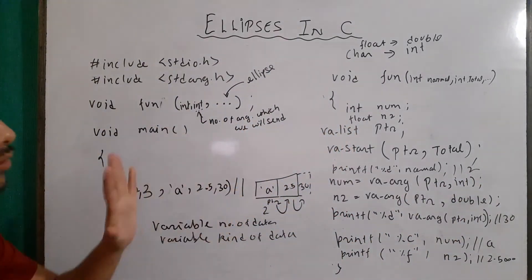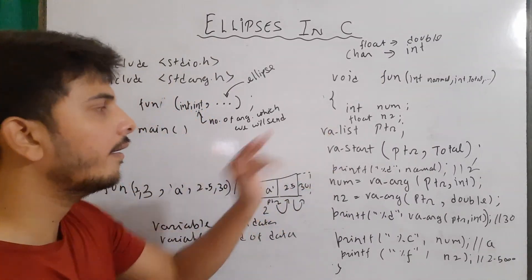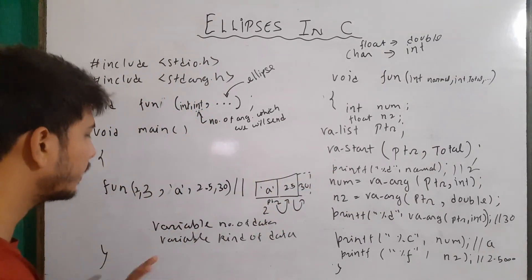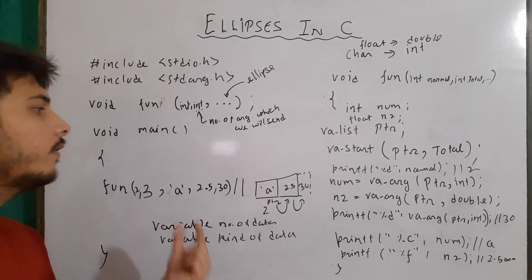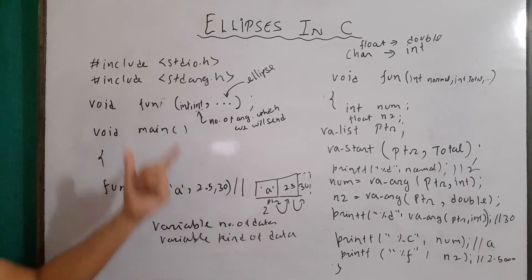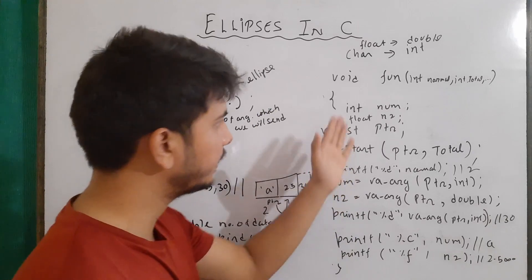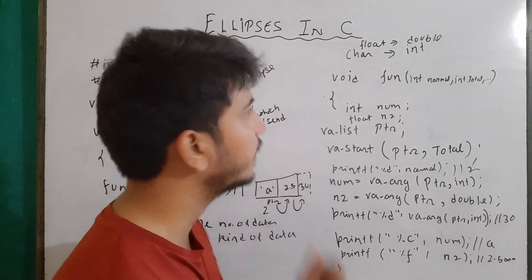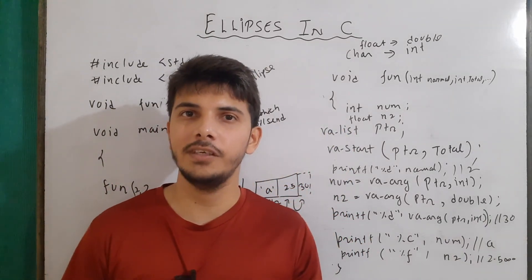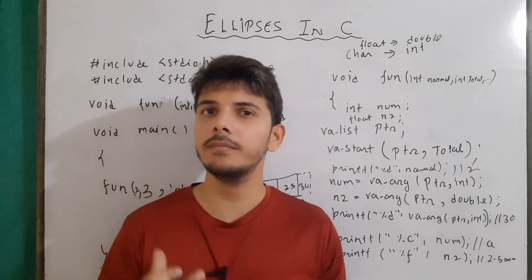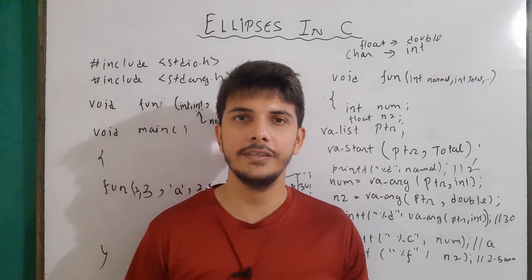This is the basic use of how we can send a variable number of arguments to our function — variable number of data and variable kind of data. This is a helpful feature we can utilize. I hope you get the idea of using ellipses. That's all for today guys. I hope you liked the video. If you have any doubt, please comment it down. Thanks for watching and I hope to see you in the next video.